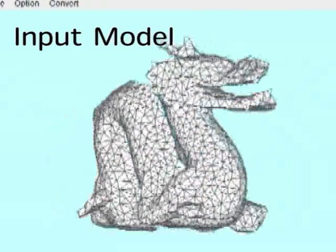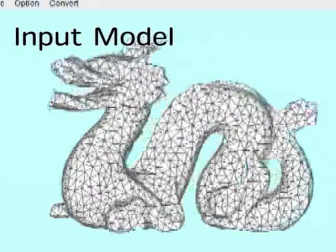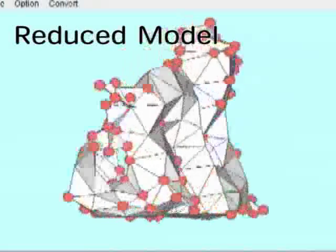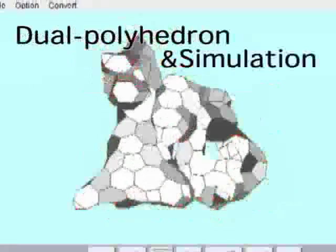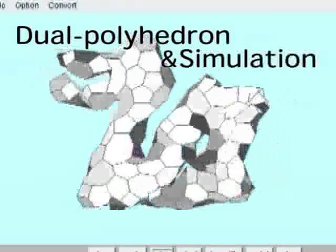This is an input dragon mesh. This is a reduced mesh. This is a dual polyhedron.